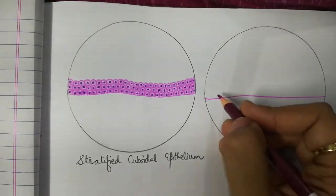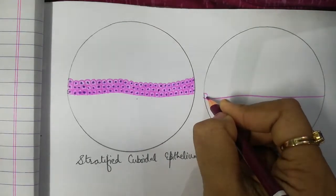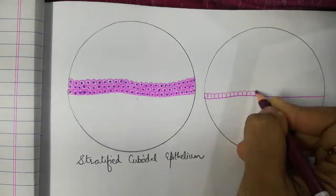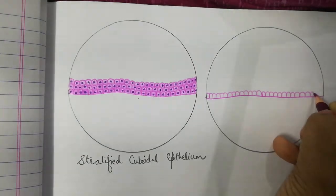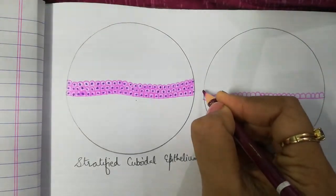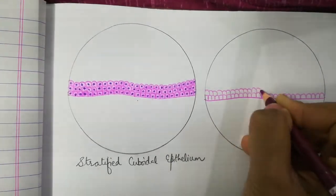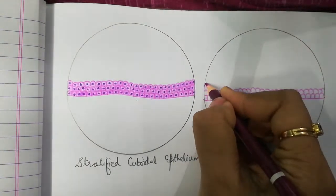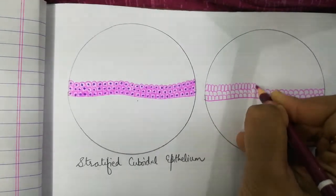Now we will draw stratified columnar epithelium. In this epithelium, the innermost cells will be columnar shaped, while the basal cells will be cuboidal. We draw two to three layers of simple cuboidal shaped cells, then a second layer of cuboidal cells. The last layer — the innermost layer — will be of columnar shaped cells. Only then we call this type of epithelium stratified columnar epithelium.